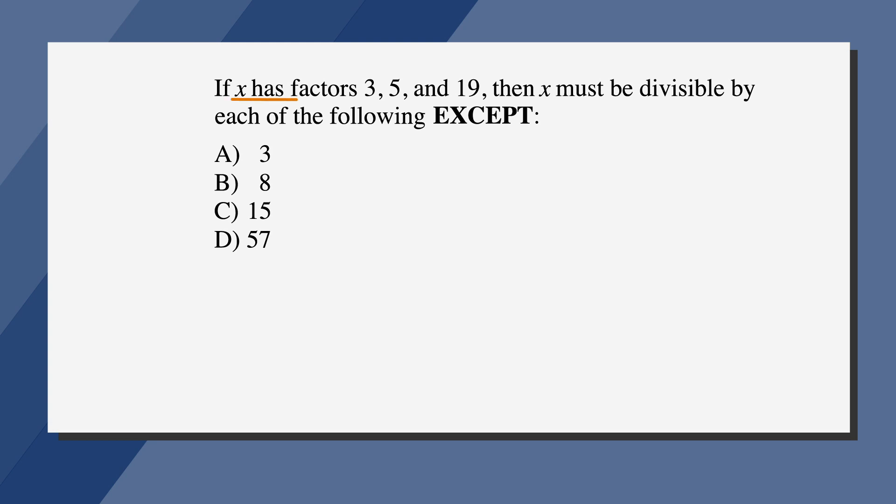Let's underline the facts. x has factors 3, 5, and 19, and x must be. Then we want to circle the key terms, divisible by and except. This last one is really important because it's telling us that we're looking for the one answer choice that isn't a factor of x. Finally, let's label the answer choices so we're sure to answer the right question.